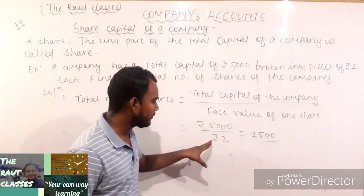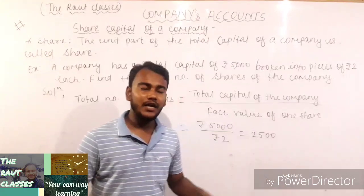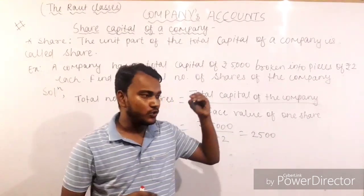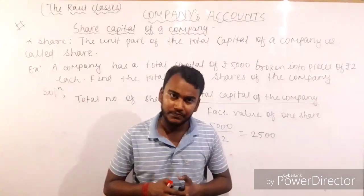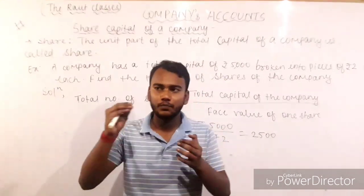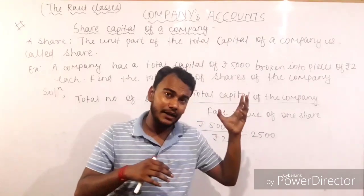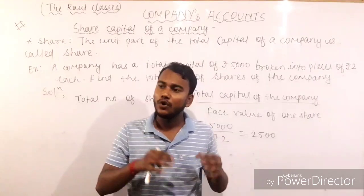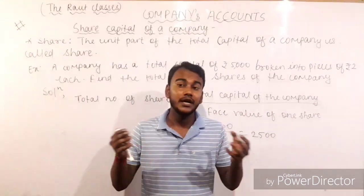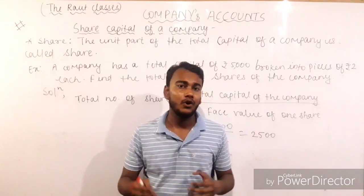Here it is 5000 divided by 2, which gives us the value of 2500 as the total number of shares that the company owns. In our childhood, when we used to study in class 6th and 7th, we were taught that if the total amount of money with you is rupees 100 and you go to a shopkeeper and ask him to give you a pen which costs rupees 10 each, you divide 100 by 10 and get 10 pens.